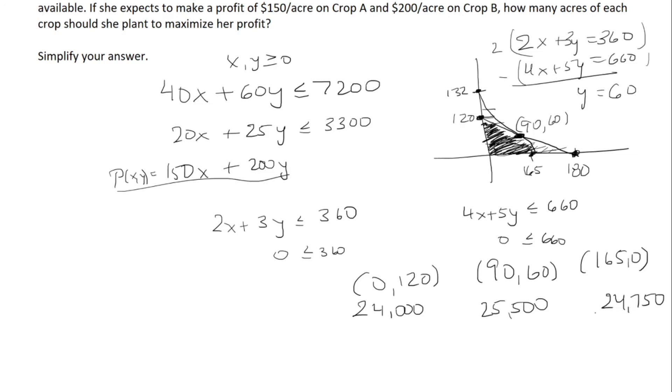So going back to the question, how many acres of each crop should she plant to maximize her profit? Well, 90 acres of Crop A and 60 acres of Crop B, because this is the biggest one out of the three. So this is our answer.